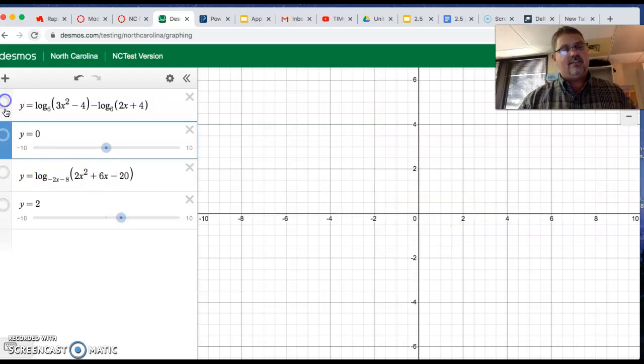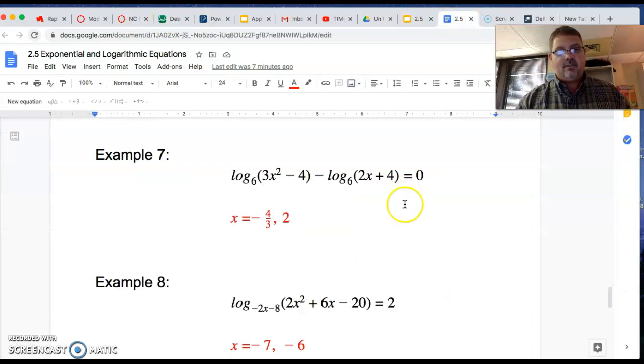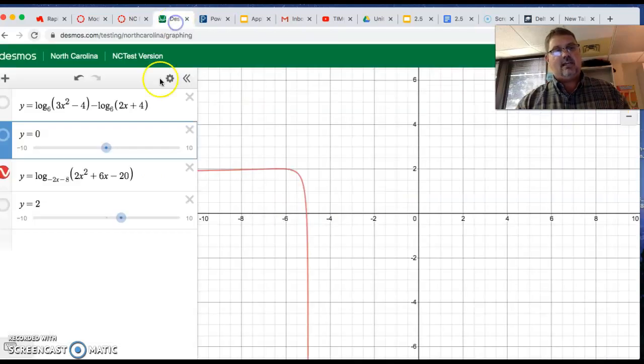Alright, so let's get this next one in here. This one was that weirdo we did. We want to know when is it equal to two, just to go back and show you what I'm talking about. It was log base negative two x minus eight, and it's equal to two, and I typed it in just like it said, and there's where it's two.